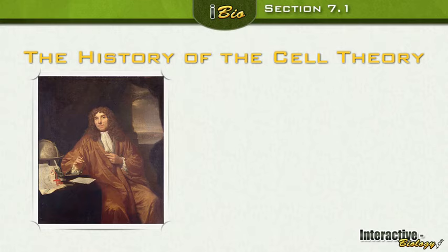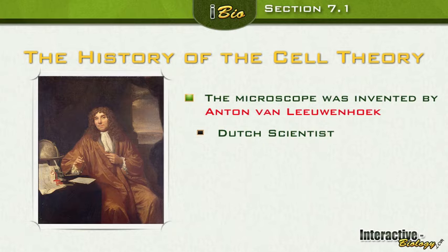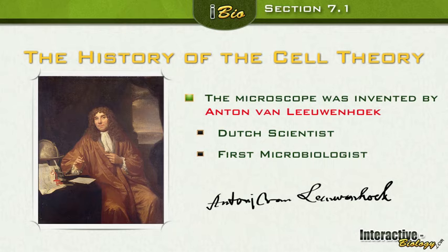The history of the cell theory. There are a number of people that played a significant role in what we know about cells today. The first one is the person that invented the microscope, and his name was Anton van Leeuwenhoek. He was a Dutch scientist, and he's considered to be the first microbiologist, which makes sense if he's the one that invented the microscope. If you were to translate that name in English, 'Leeuwen' means lions and 'hoek' means corner — so a lion corner.